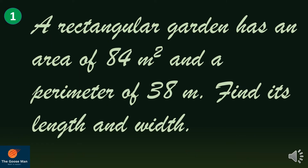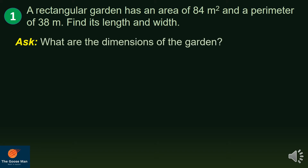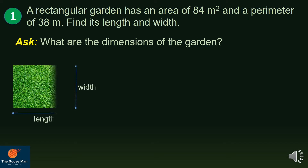Let's have our example number one. A rectangular garden has an area of 84 square meters and a perimeter of 38 meters. Find its length and width. From this problem, we want to find out what is being asked. We want to find out the dimensions of the garden — specifically, the length and the width.